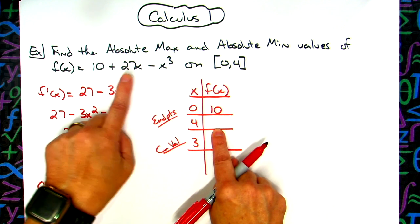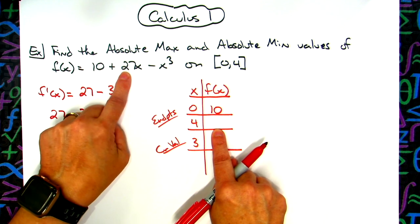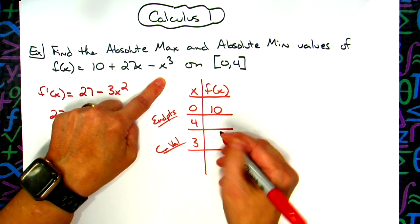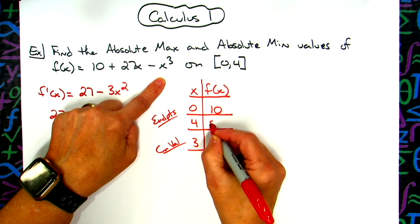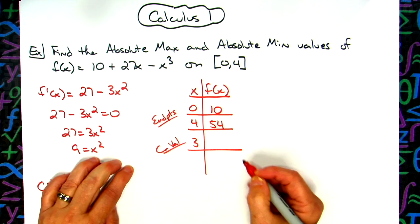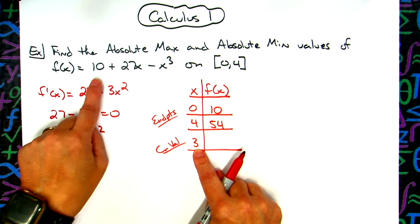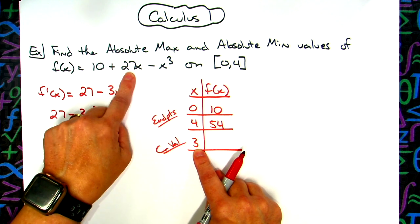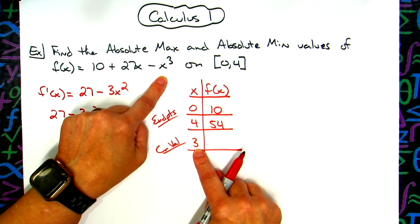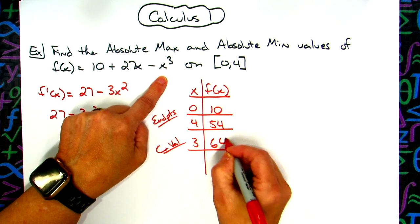If I plug in 4, I'm going to have 10 plus 27 times 4 minus 4 to the third. That's going to give me, you'd use a calculator real quick and you'd come up with a 54. You're going to take a 3 and you're going to take 10 plus 27 times 3 minus a 3 to the third power. That's going to give you a 64.